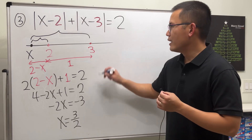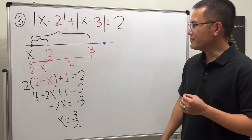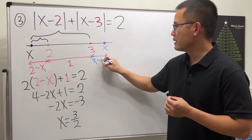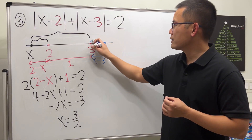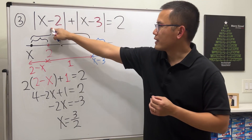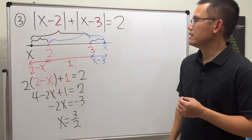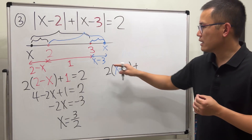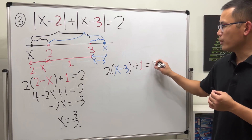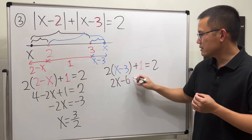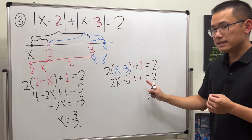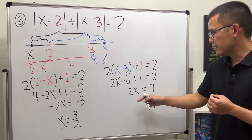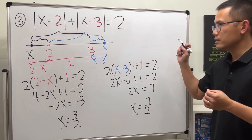For the second solution, x is to the right of 3. The distance from 2 to 3 is 1, and the distance from 3 to x is x minus 3. Again that middle segment is counted twice. So the equation becomes 2 times (x minus 3) plus 1 equals 2. Expanding: 2x minus 6 plus 1 equals 2, which gives 2x minus 5 equals 2. Add 5 to both sides: 2x equals 7. Divide by 2: x equals 7/2. Just like that.